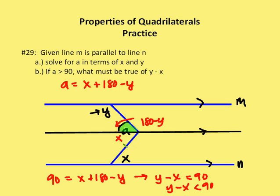This angle here is equal to 180 minus Y degrees. And I know the alternate interior angles are congruent. So this alternate interior angle, which I'll mark in yellow, is going to be equal to X. So these two angles combined are equal to A, and A is equal to X plus 180 minus Y. So I've solved for A in terms of X and Y.